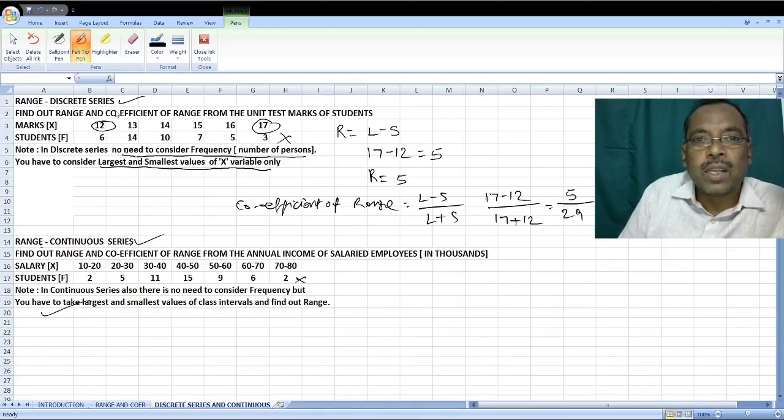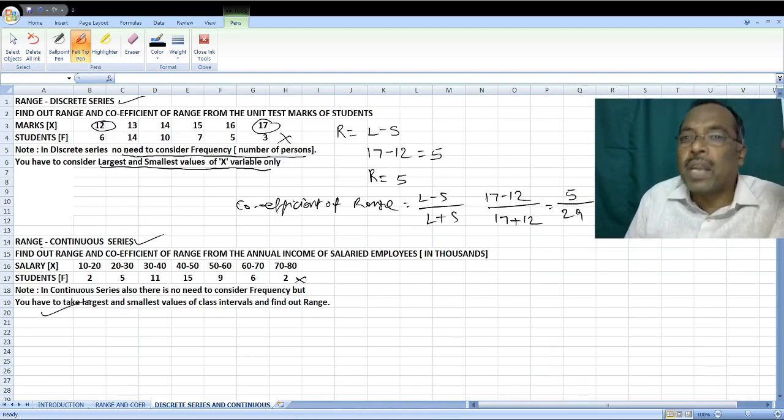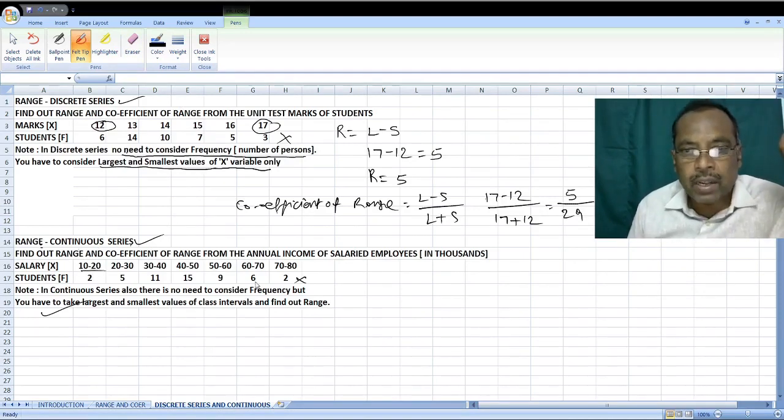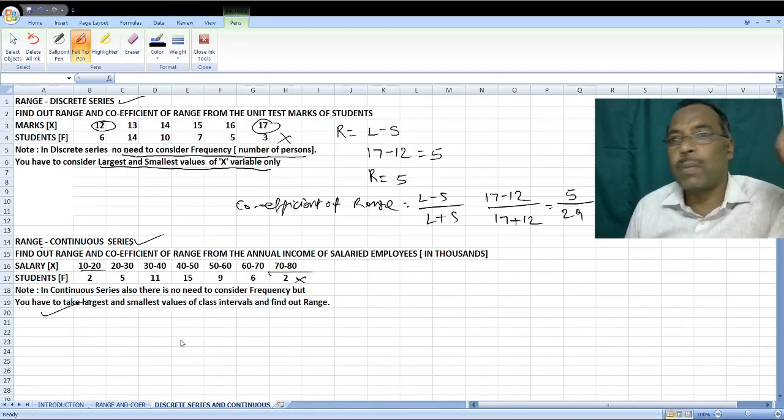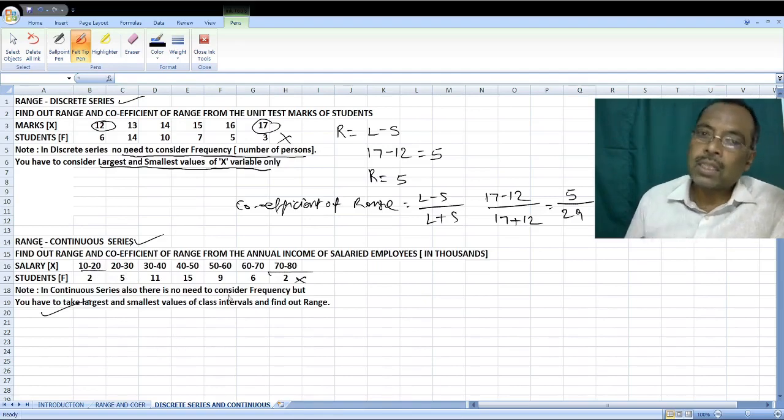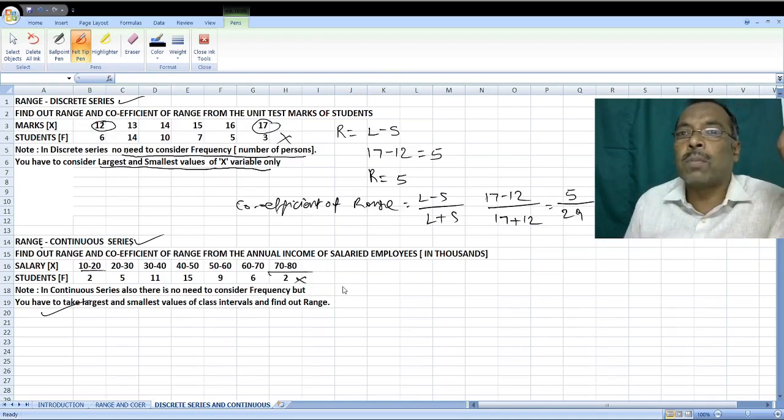That is in Discrete Series. My dear students, you have to understand that frequency will not be given any importance in Discrete Series and also in Continuous Series. When you come to Continuous Series, Class Intervals are given: 10 to 20, 20 to 30, 30 to 40, like that. And in this also, you are going to take Largest Value and Smallest Value.